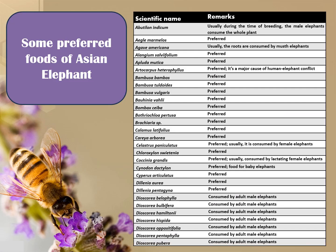These are some preferred food plants of Asian elephants, which can be used to reduce human-elephant conflict at habitat, breeding, and migratory sites. These include plants such as Ebotyllum indicum, Aegle marmelos, Agave americana, Alangium salvifolium, Apluda mutica, Artocarpus heterophyllus, Bambusa bambos, Bambusa tulda, Bambusa vulgaris, Bauhinia variegata, and Bombax ceiba, among others.